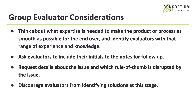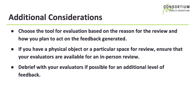Here are a few tips and tricks. As you prepare for your heuristic evaluation, consider these factors when identifying your evaluators if you are using a group: What expertise does this person have that will help refine my product or process to the benefit of my user or learner? Do my evaluators represent different types of experiences and expertise? Because you will have multiple sticky notes or sheets with comments, ask evaluators to include their initials or assign them different colors so you can follow up with questions as you incorporate changes into your design. Make sure to ask for details about the issues identified and which rule of thumb is being disrupted. And discourage your evaluators from identifying solutions at this stage — when all feedback is collected, issues may combine in a way that needs a different solution than an issue that stands alone. Make sure you choose tools based on your goals for the review and how you plan to act on the feedback generated.